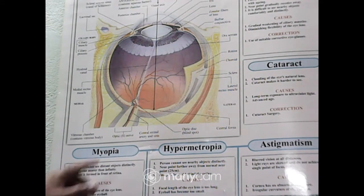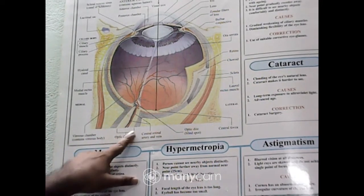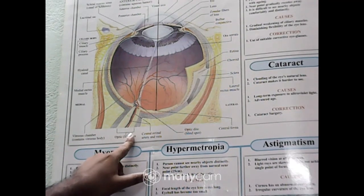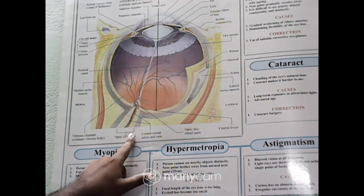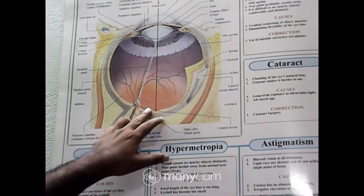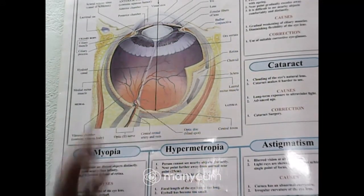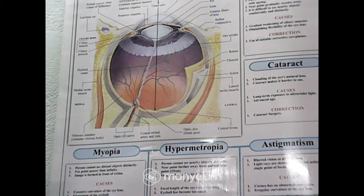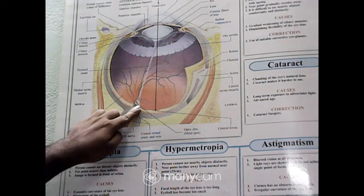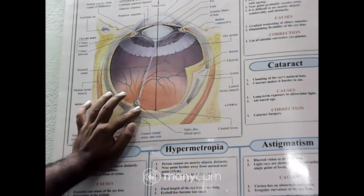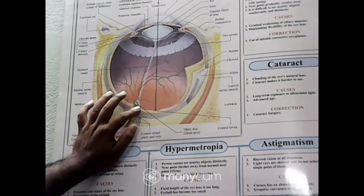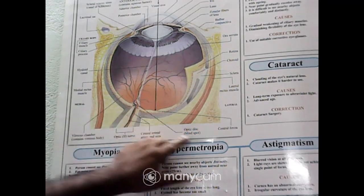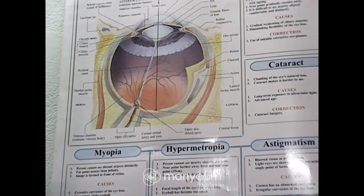The next part is the optic nerve. The electric signal — which is generated from the image formed at the retina — is transferred to the brain by the optic nerve. That is the function of the optic nerve. At that point where the optic nerve connects, no photosensitive cells are there, so no image is formed there. That is why this spot is called the blind spot.